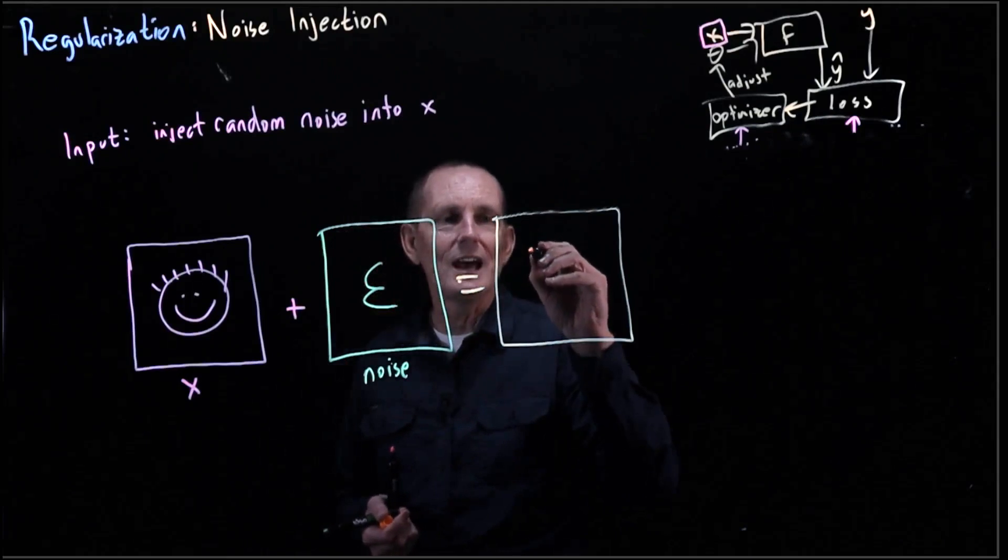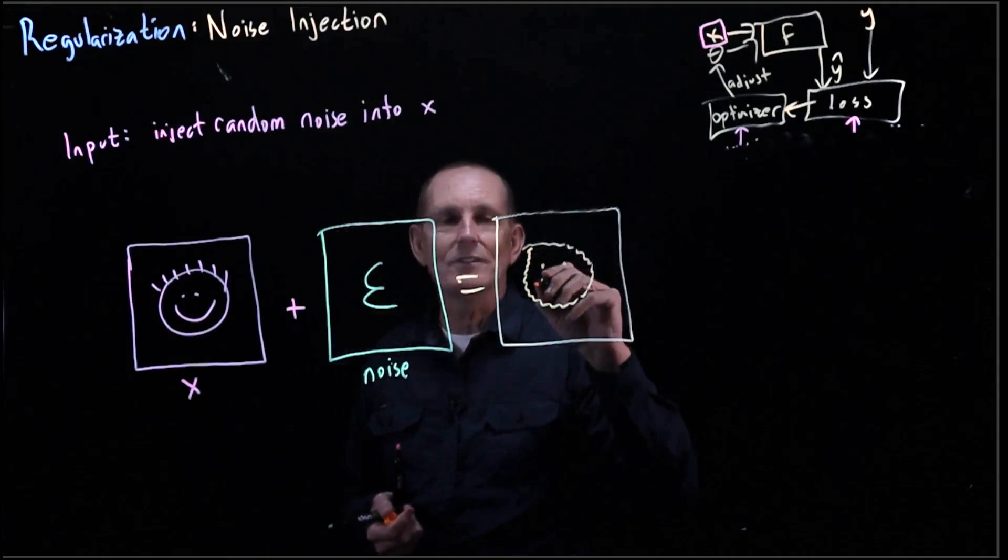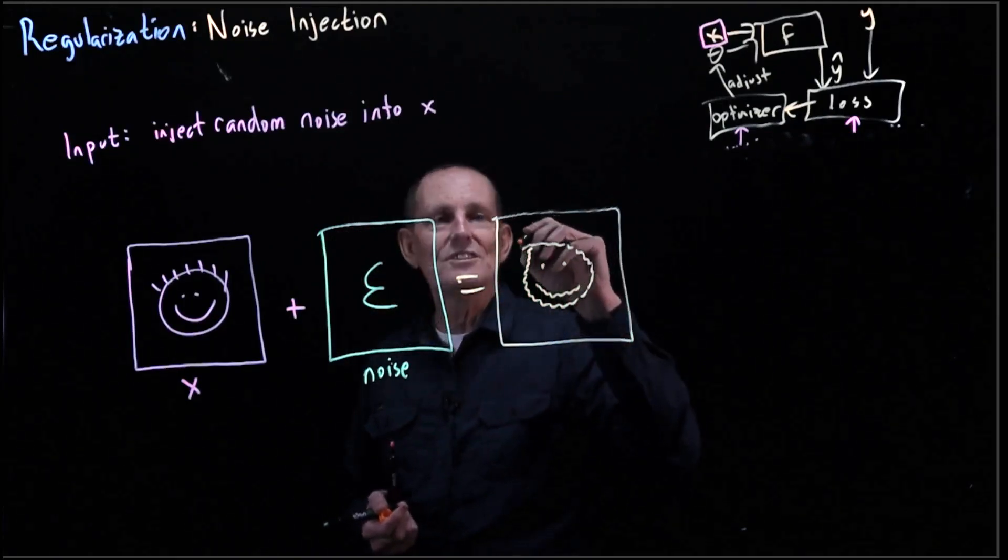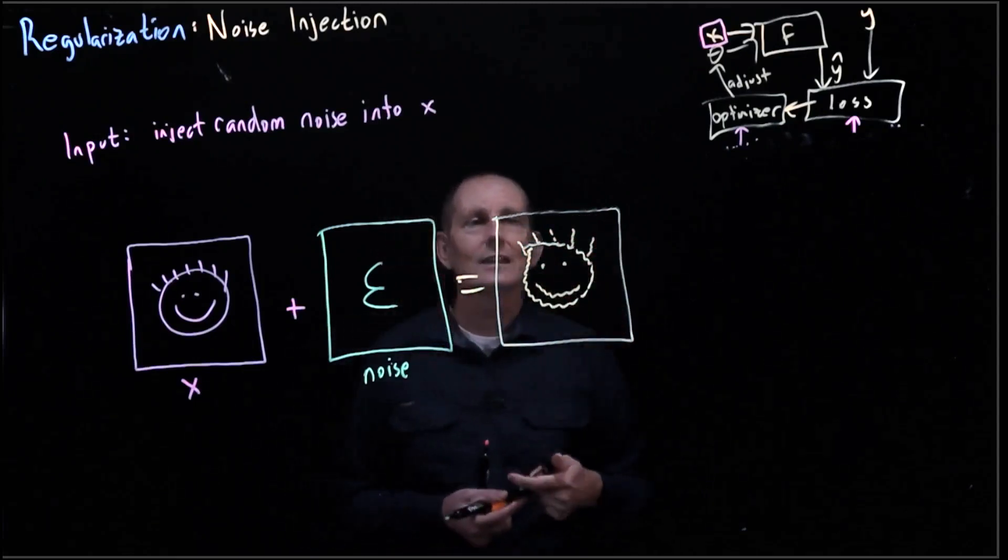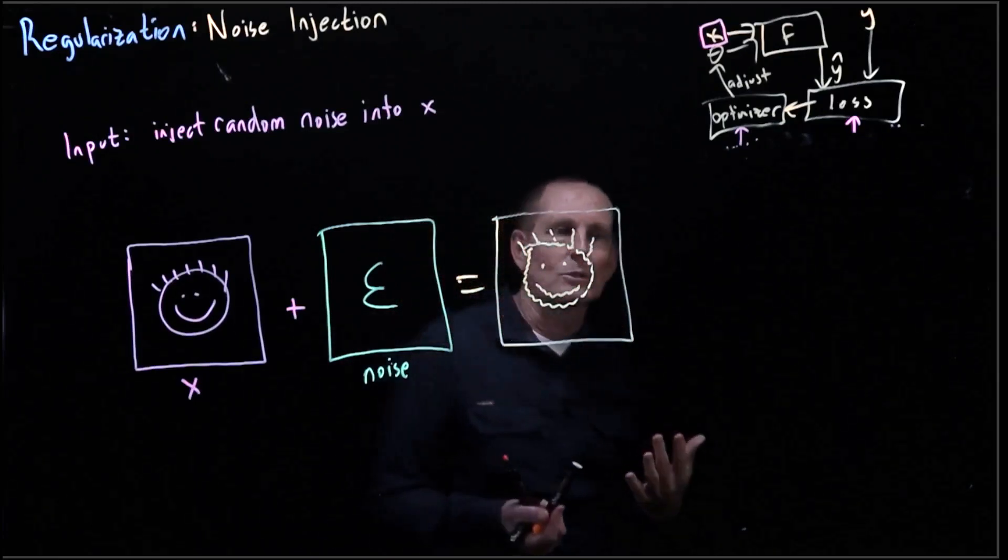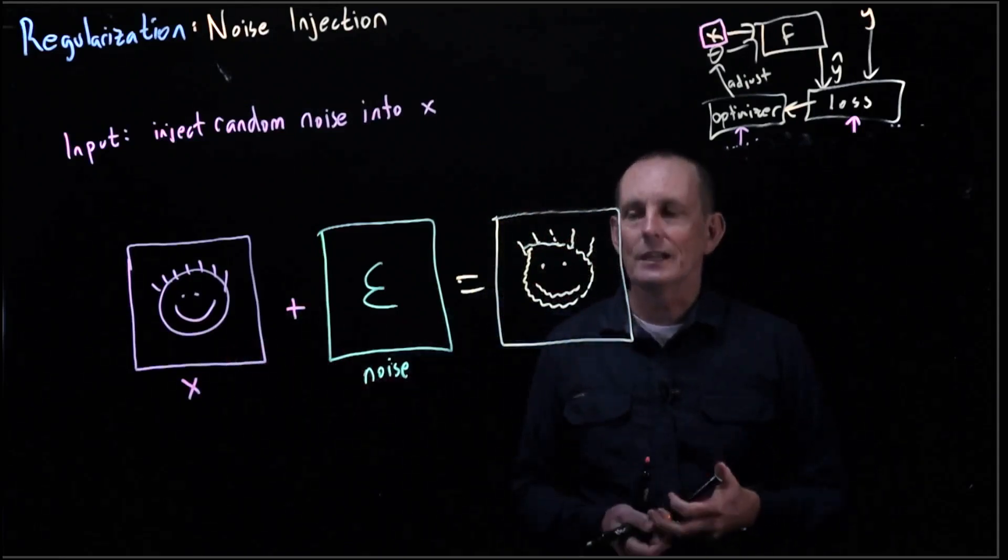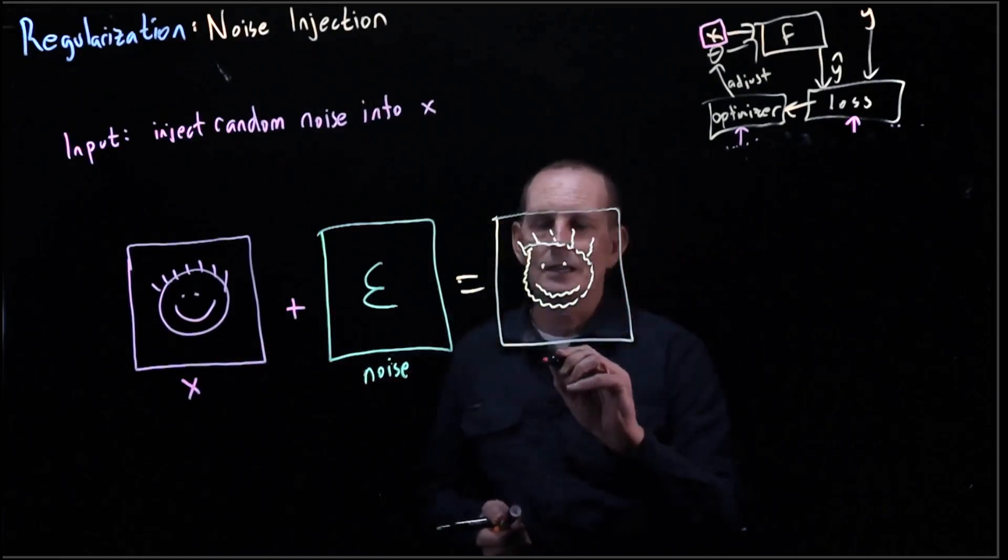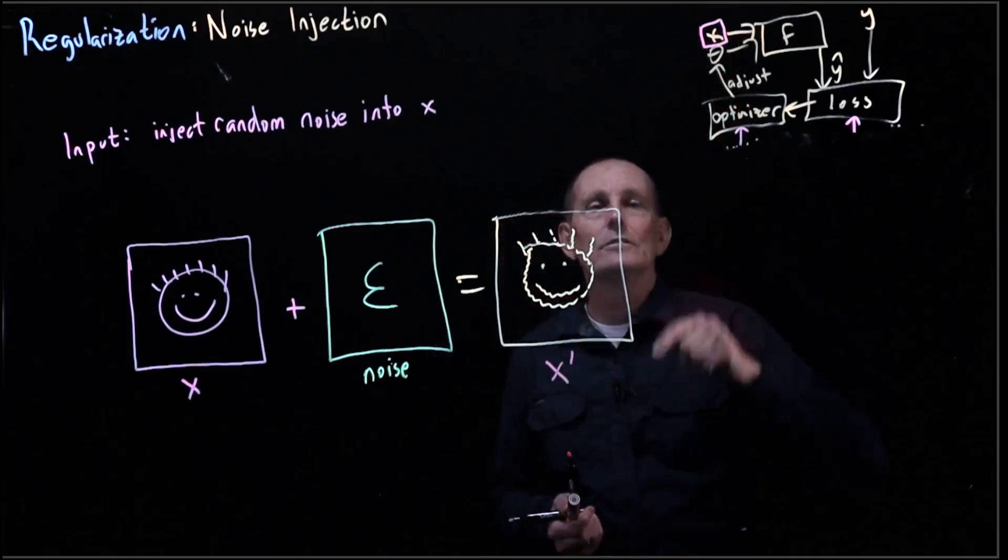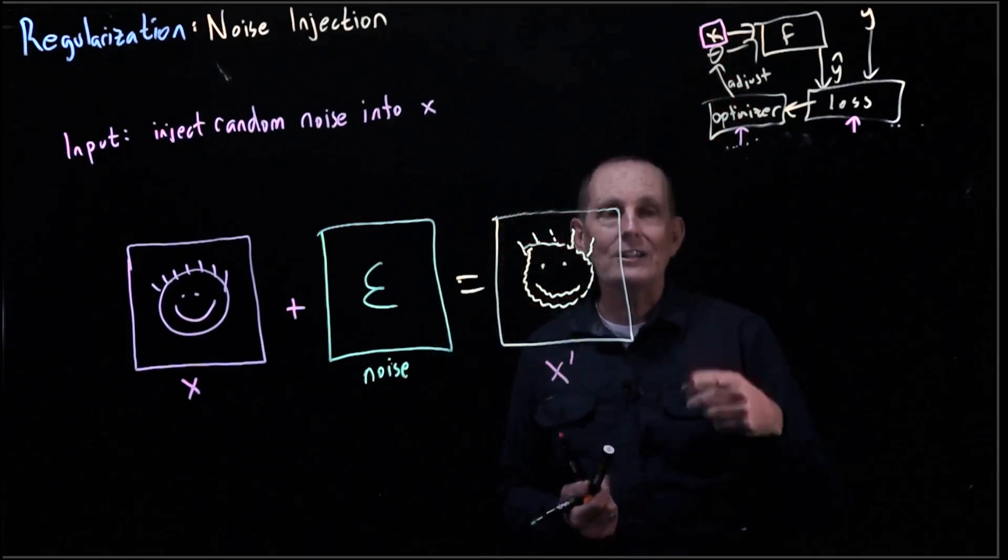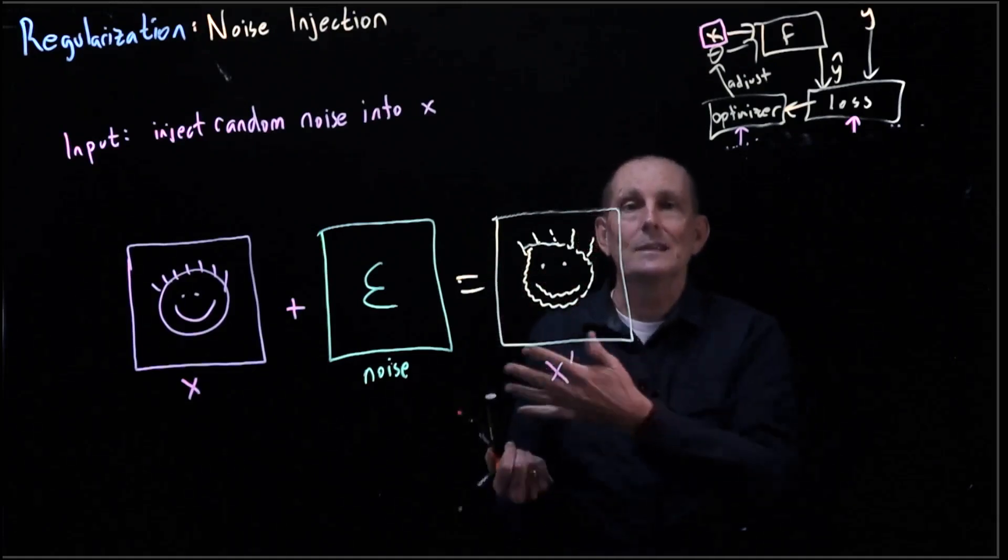So conceptually, what I'm going to represent this as is a kind of noisy happy face. This is not really what is happening. The adding noise doesn't make the lines go jagged, but that's the conceptual idea of this, is that we are a little bit reducing the fidelity of x. And so this is our x prime. And our x prime is what we feed in here for our training. Every batch that we run through, we're going to be generating slightly different noise, a different random set of noise.